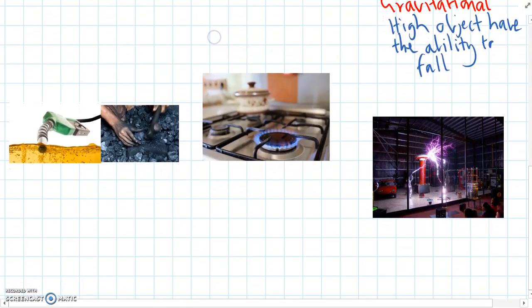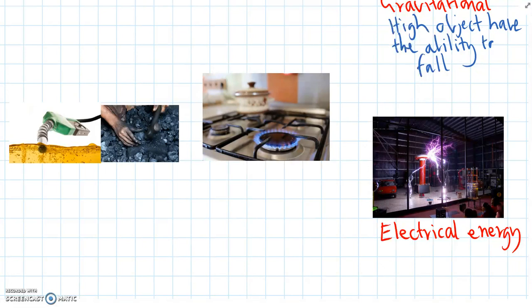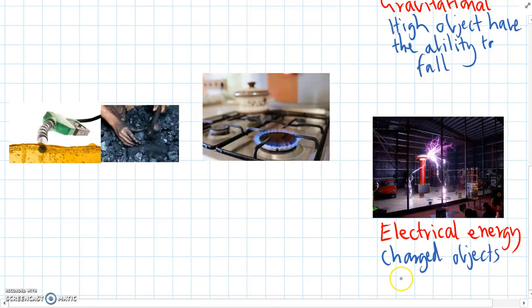Another type of energy down here. If you've ever been to Science Works, you might have seen these big Tesla coils, and these let us see electricity. Usually electricity is just in wires. But electrical, or electricity, is a type of energy. So electrical energy. And this type of energy involves charged objects, or charged particles, moving. That's probably the most simple way to explain it.